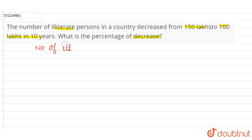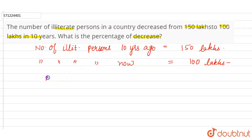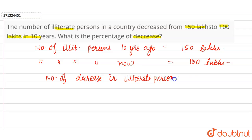It is given that the number of illiterate persons 10 years ago was 150 lakhs, and the number of illiterate persons now is 100 lakhs. So the decrease in number of illiterate persons over these 10 years is 150 minus 100 lakhs, which is equal to 50 lakhs.